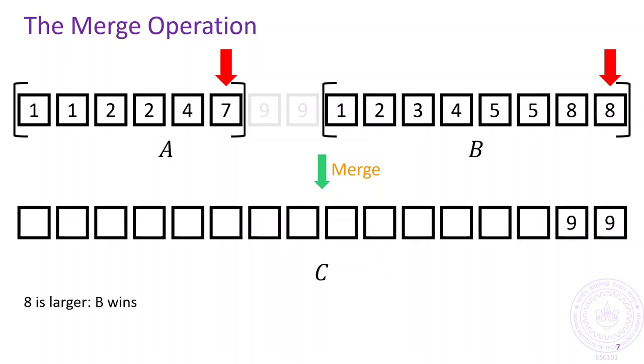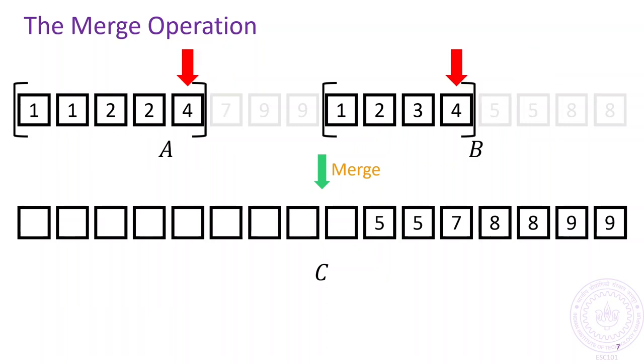This keeps going on. We compare the rightmost elements of the active regions, write those elements in c, and shrink the winner's active region. Doing so repeatedly will ensure that c is sorted in increasing order and contains all the elements in a and all the elements in b.